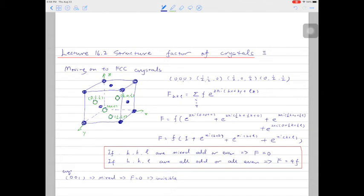How about 002 planes or diffraction spots? In this case, they are all even, so the structure factor will be equal to 4f, and these spots will be visible.